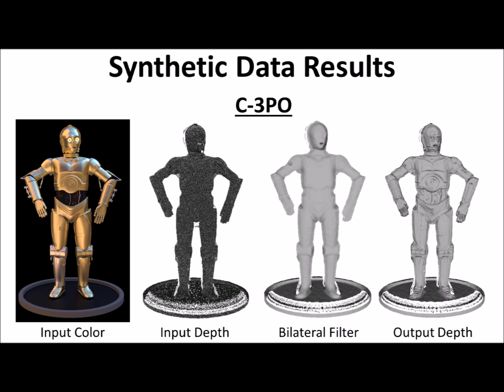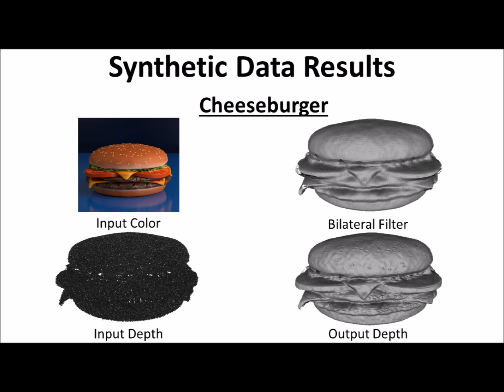This is our enhanced model of C-3PO, taken from the BlendSwap repository. Notice how we successfully managed to recover the wires around the section on the belly. Our last synthetic model is the cheeseburger, also taken from the BlendSwap repository. Fine details such as the sesame and the burger texture are restored.